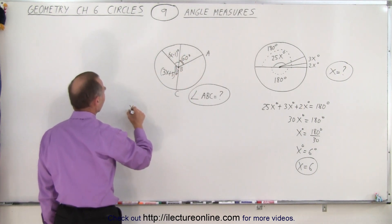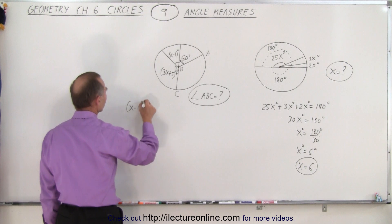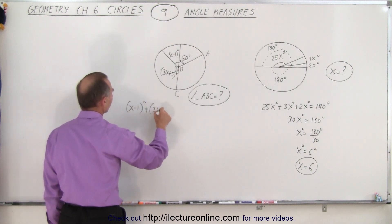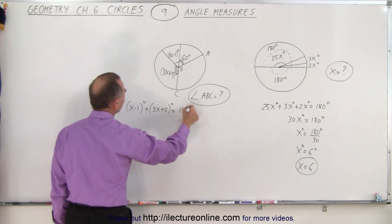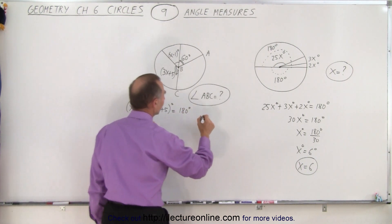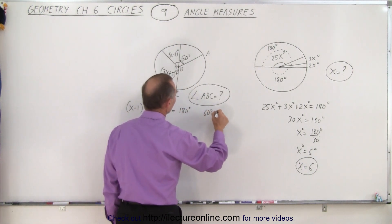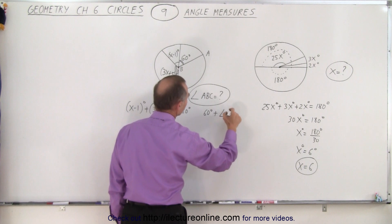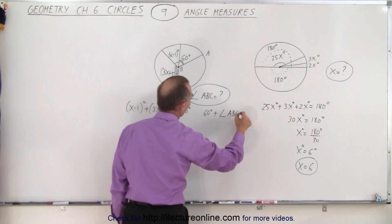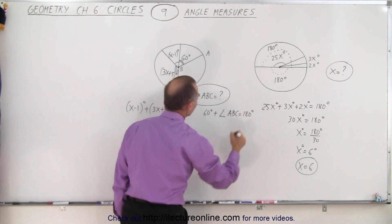So on the left side we can say that x minus 1 degrees plus 3x plus 5 degrees equals 180 degrees. On the right side we can say that 60 degrees plus the angle from A to B to C, ABC, also add up to 180 degrees.